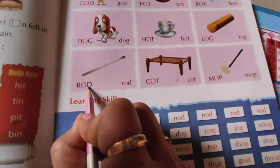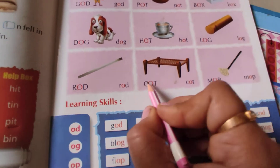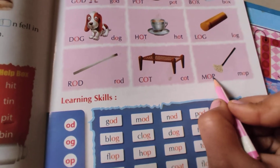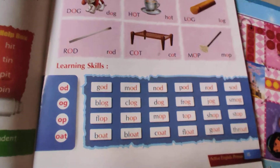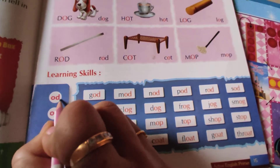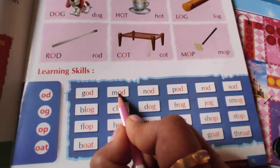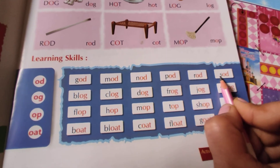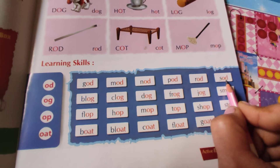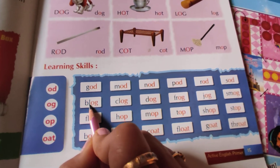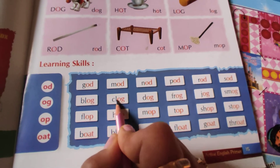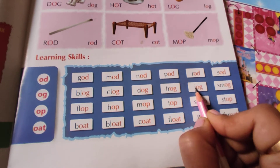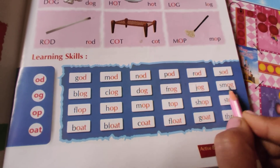R-O-D — Rod. C-O-T — Cot. M-O-P — Mop. S-O-D — Sod. B-L-O-G — Blog. C-L-O-G — Clog. D-O-G — Dog. F-R-O-G — Frog. J-O-G — Jog. F-S-M-O-G — Smog.